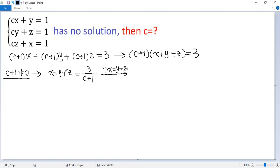Now we change all variables to z, so we get z plus z plus z equals 3 over c plus 1. So z equals 1 over c plus 1.